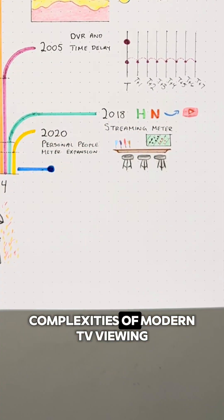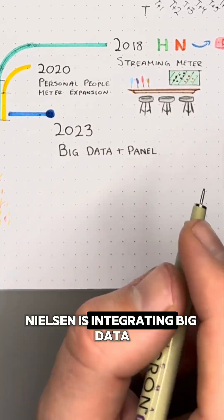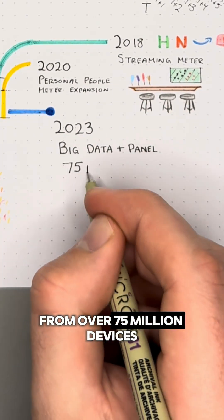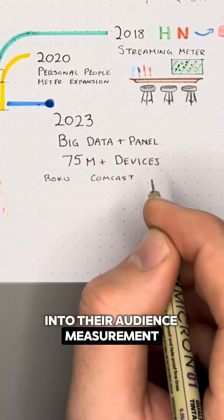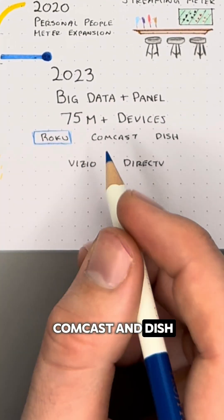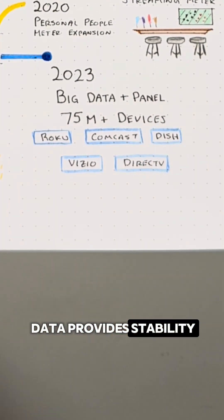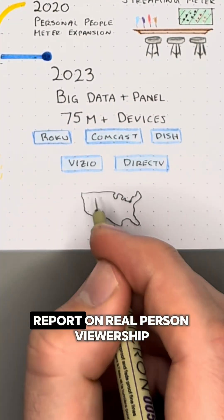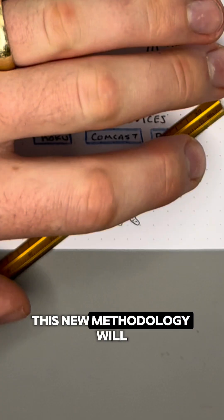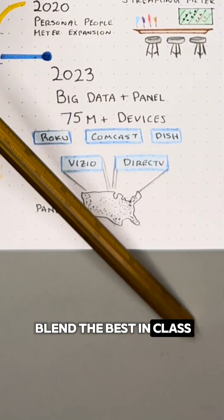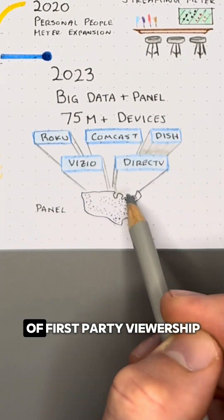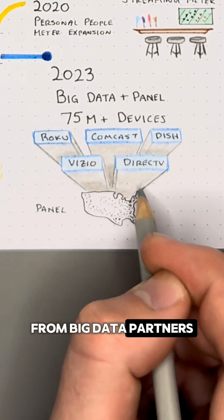Now, to account for the complexities of modern TV viewing, Nielsen is integrating big data from over 75 million devices into their audience measurement from partners like Roku, Comcast, and Dish. The breadth of big data provides stability while the panel continues to report on real-person viewership. This new methodology will blend the best-in-class third-party panel metrics with a gigantic scale of first-party viewership from big data partners.